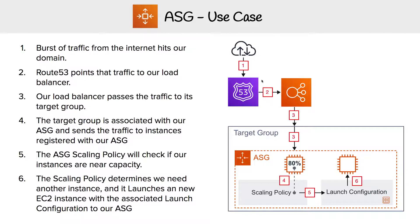Let's say we have a web server and we have one EC2 instance running. All of a sudden, we get a burst of traffic, and that traffic comes into the application load balancer. The application load balancer has a listener that sends the traffic to the target group, and we have this EC2 instance which is associated with that target group.